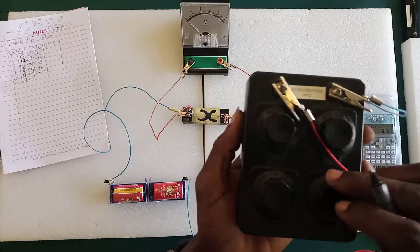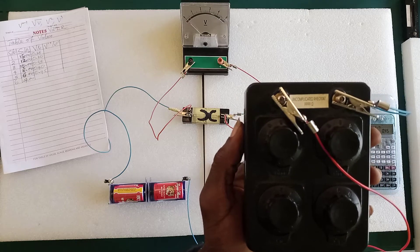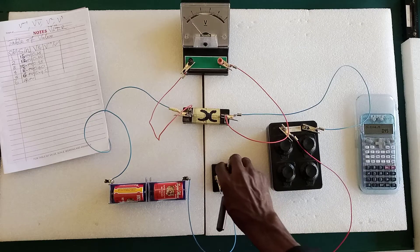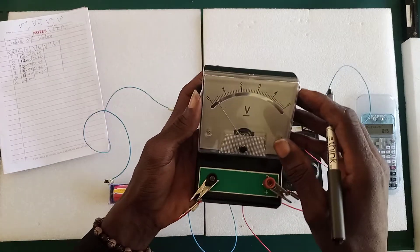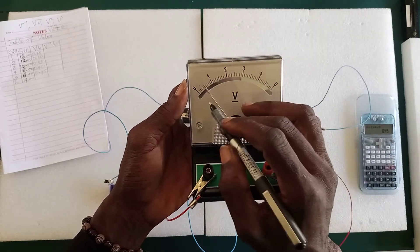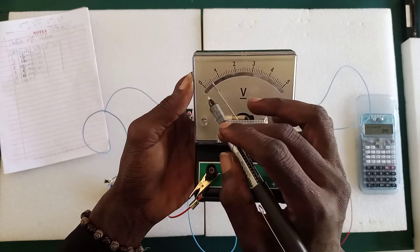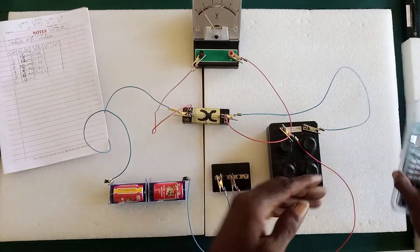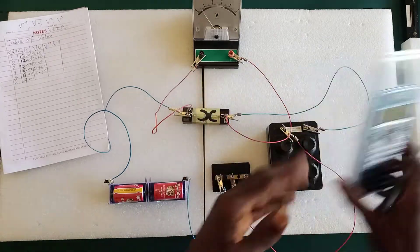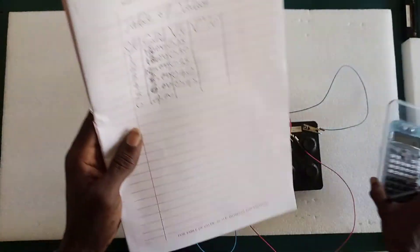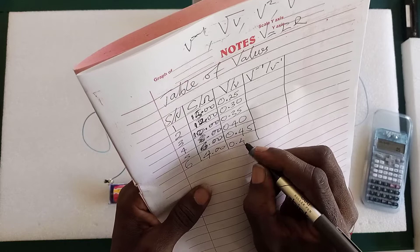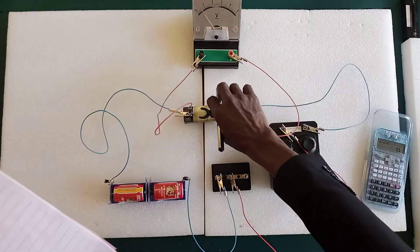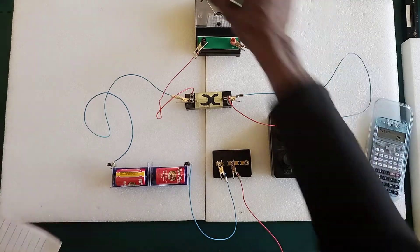The last reading: reduce the resistance box to 4 ohm. You can see that. Close the circuit again. The pointer is on 5. Calculation: 0.1 × 5 = 0.5. Record 0.50. We are done running the experiment.